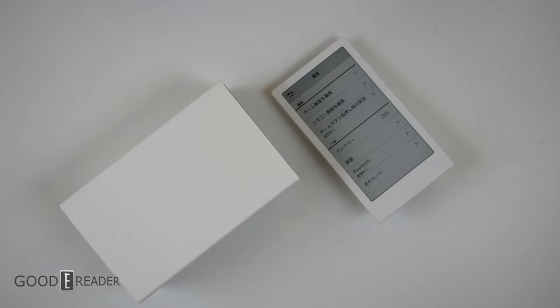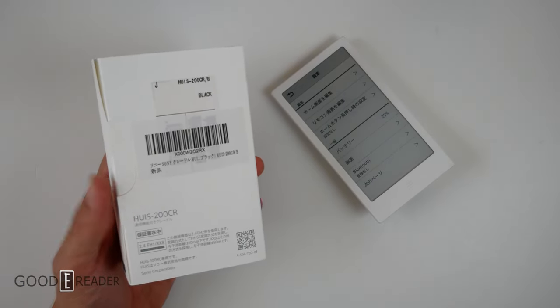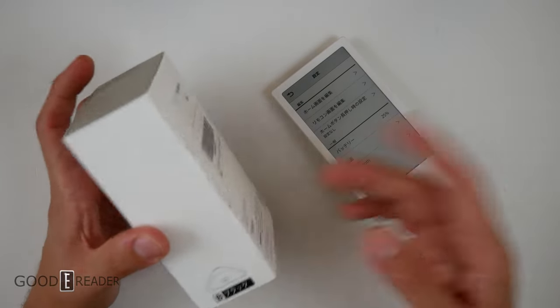They make a cradle for it, which we actually didn't know until recently. It comes in its own box. It's called the HUIS 200 CR. This one in particular is black but they make a white one.